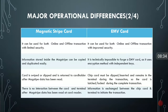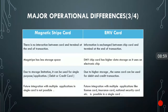With a magnetic stripe card, only the magnetic stripe data is read when dipping. There is no interaction between card and terminal — only the data is read. The EMV card has higher data storage capacity. Due to the storage limitation of the magnetic stripe card, it can only be used for a single application — either a debit card or a credit card. But with an EMV card, the same card can be used for both debit and credit applications.